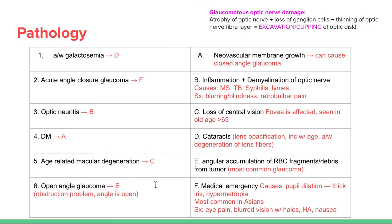Optic neuritis is inflammation and demyelination of the optic nerve. We see this with autoimmune conditions like multiple sclerosis, or with TB, syphilis, and Lyme disease. Symptoms include blurring, blindness, and retrobulbar pain — pain behind the eye — which is classical for optic neuritis. In diabetes, there is not only neovascular membrane growth in the retina, but also new vessels growing near the iris, which can cause acute closed-angle glaucoma by thickening the iris and closing the angle.